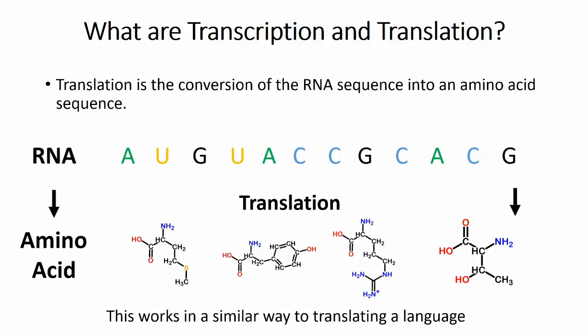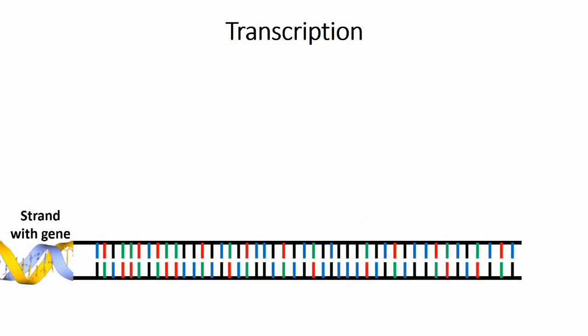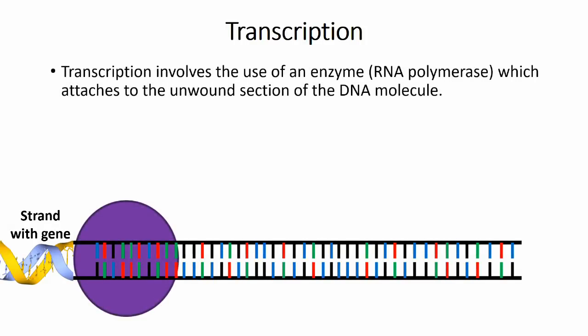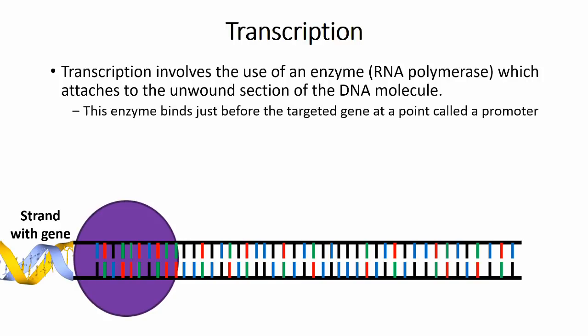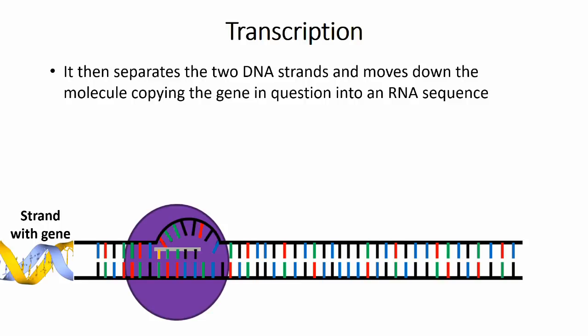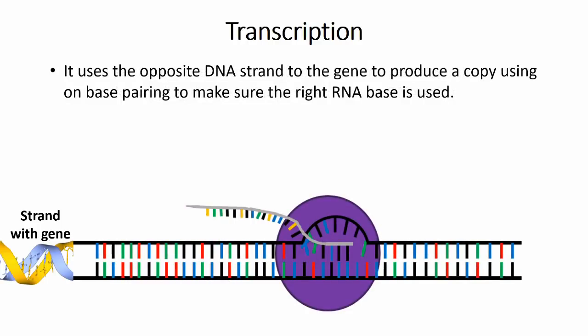And now to how these processes work, starting with transcription, where we will use this section of DNA as an example sequence. In this sequence, the top strand will contain the gene that we want to transcribe. The process starts when a section of DNA containing the gene is unwound and an enzyme called RNA polymerase binds to the DNA strand at a point slightly outside of the gene called a promoter. RNA polymerase will split the double-stranded DNA in a short section and use the DNA strand opposite the gene as a template to copy the DNA sequence, using the same base pairing matchup that DNA uses but substituting uracil for thymine to pair with adenine, and using RNA nucleotides to create an RNA strand that has the same sequence as the DNA strand with the gene that we want to copy.